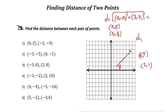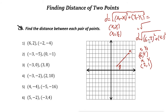To find the distance of these two, d equals the square root of — let's say A is x2, y2 and B is x1, y1. So x2 is 6 minus 2 squared, plus y2 is 4 minus 1 squared. 6 minus 2 is 4, squared is 16, plus 4 minus 1 is 3, squared is 9. So 16 plus 9 is 25. The square root of 25 is 5. So the distance of these two is 5.